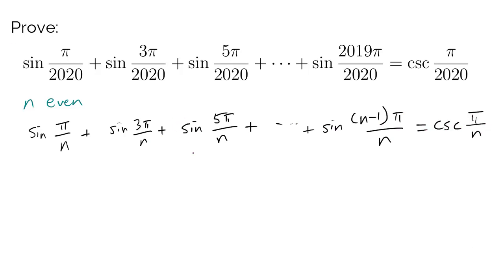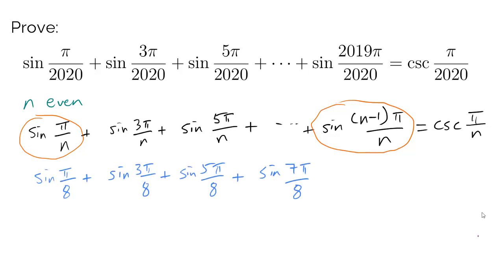Let's get started. One approach you might suggest is adding symmetric terms using sum-to-product identities, for example sine of pi over n and sine of (n minus 1) pi over n. This idea has its merits, but consider n equals 8: applying sum-to-product to sine of pi over 8 and sine of 7 pi over 8 gives pi over 8 plus 7 pi over 8 equals pi (good), but the difference is negative 6 pi over 8.